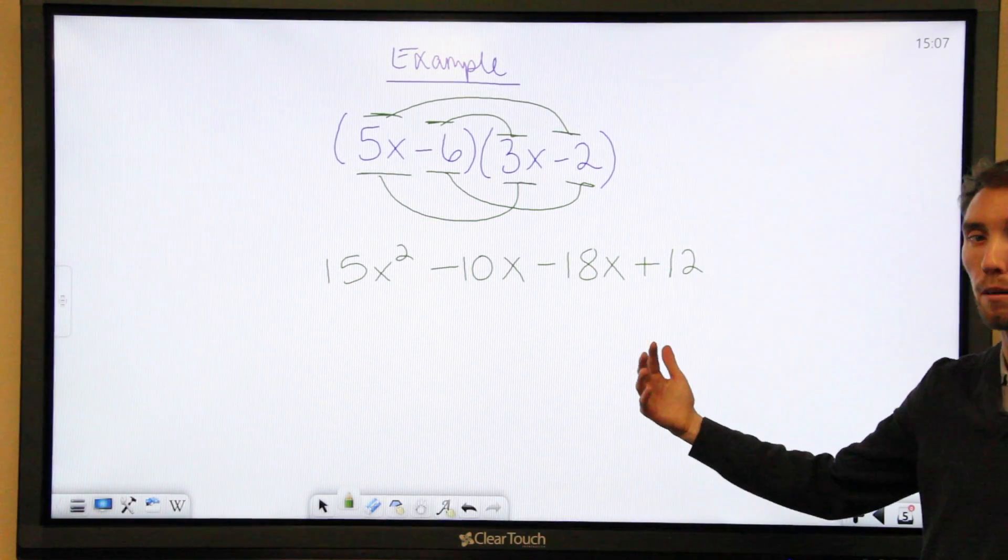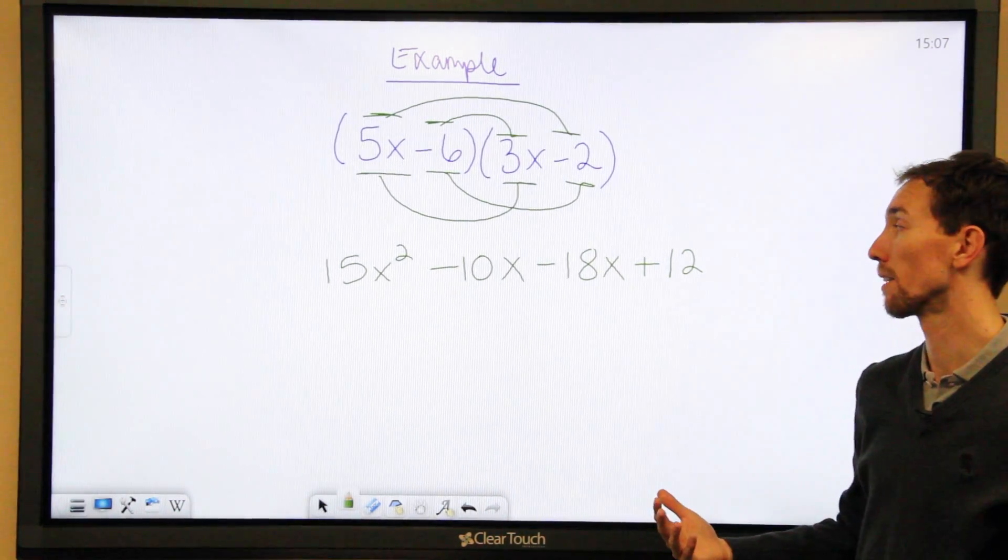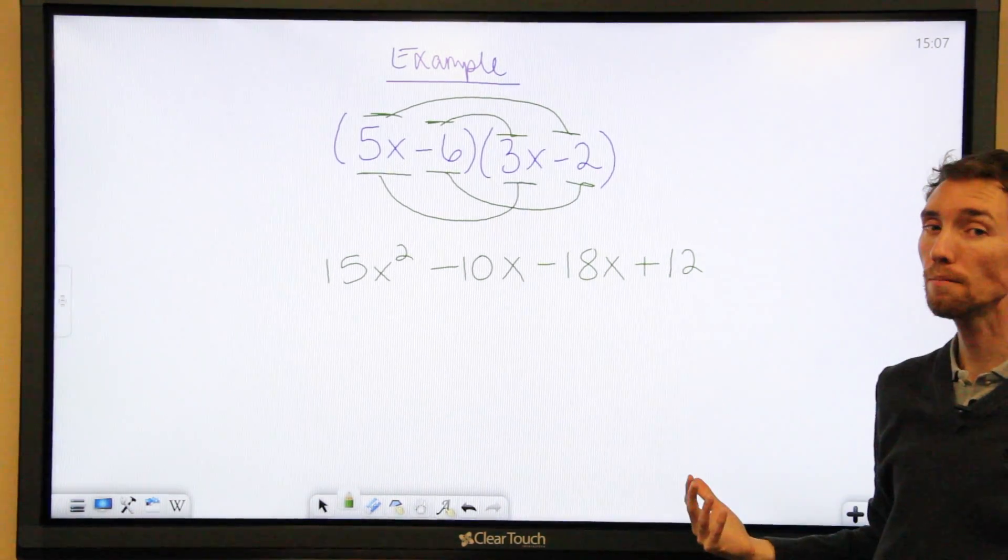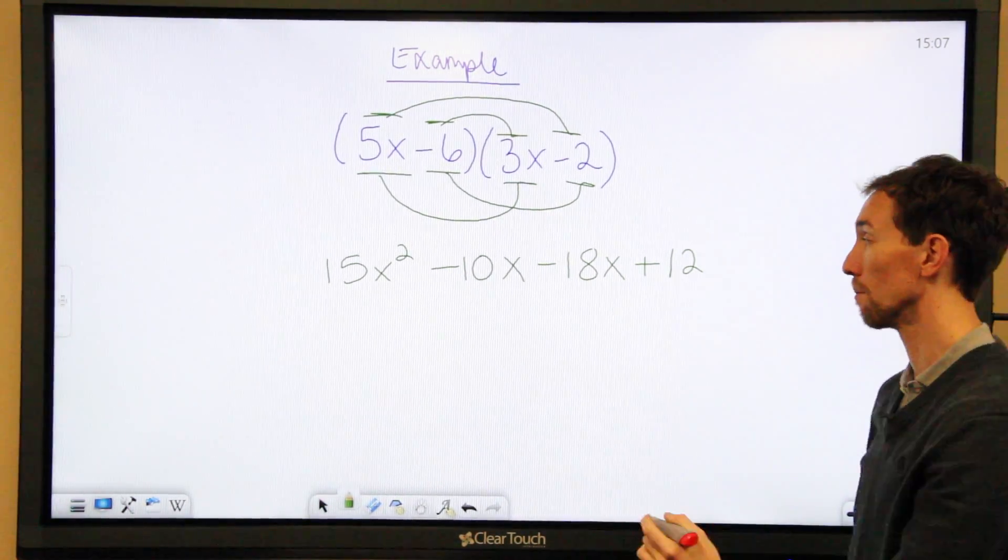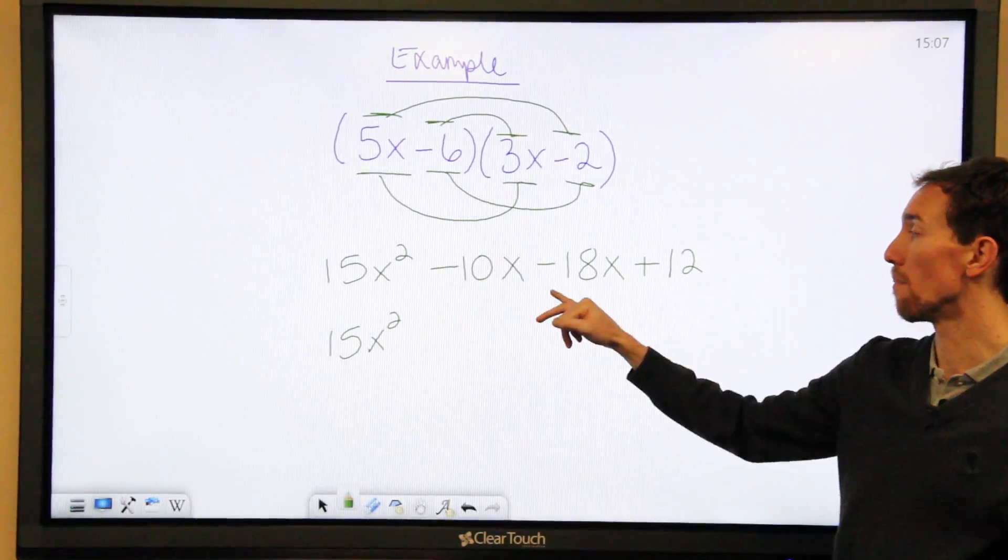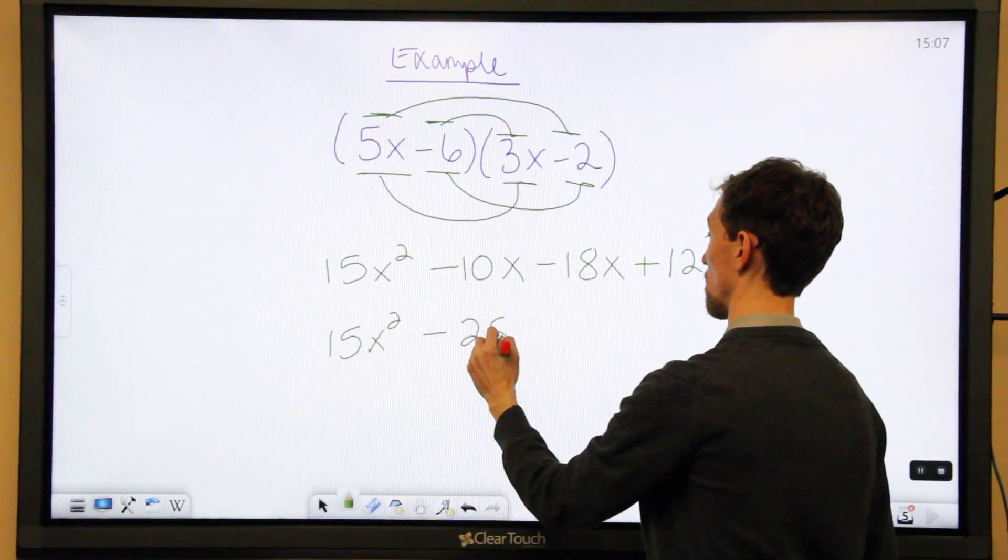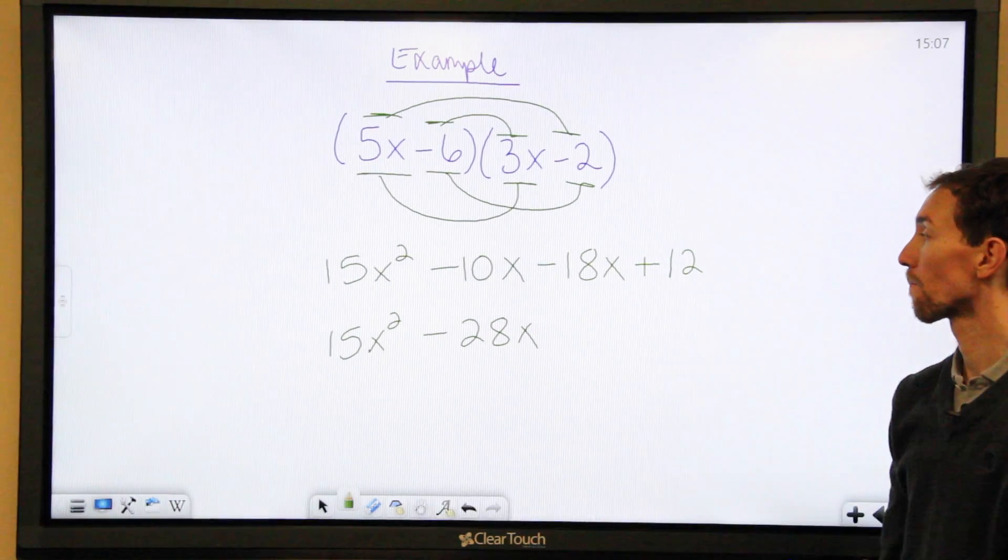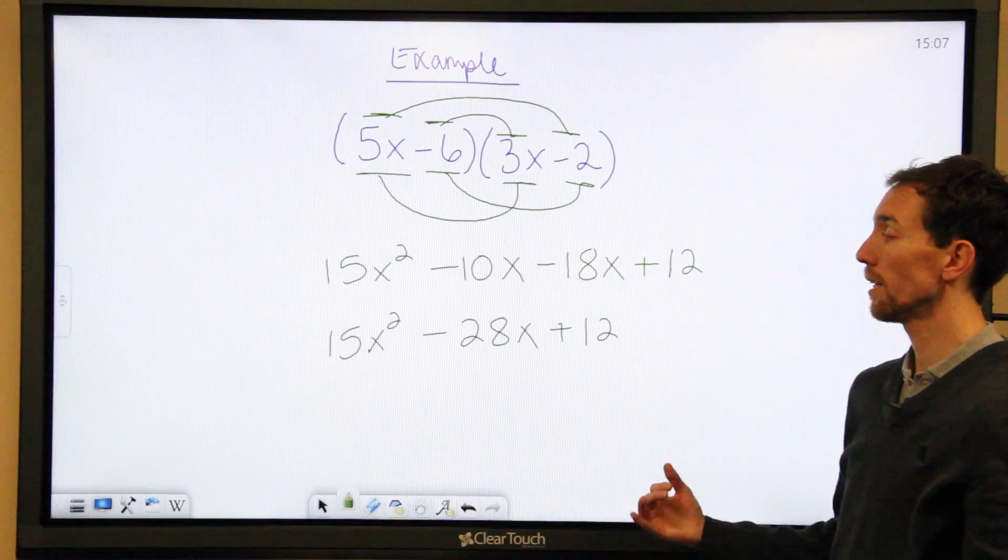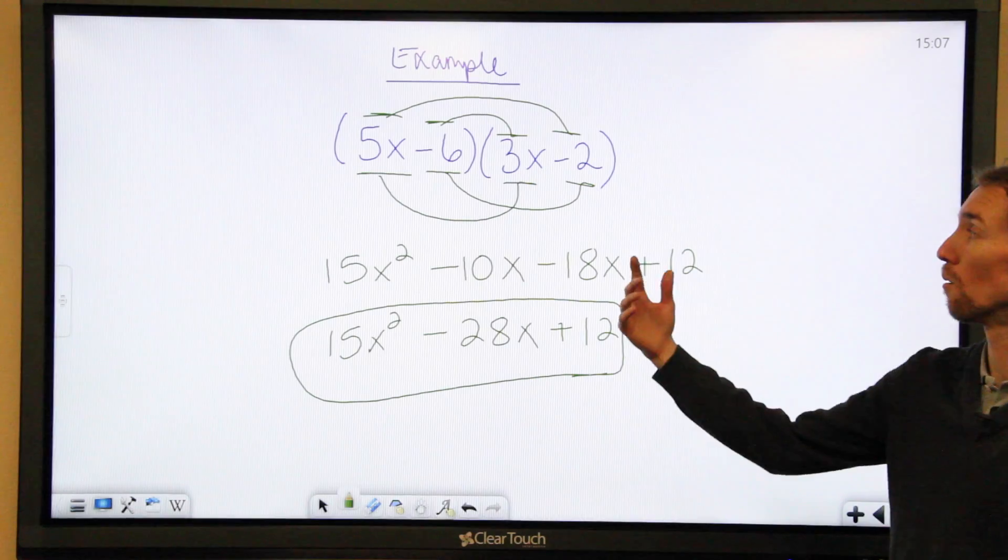Again, last step. See if you can combine like terms to further simplify your answer. Negative 10x minus 18x. Those are like terms. So we can combine them. This stays the same. Negative 10 minus 18 is negative 28x and plus 12. So this is our final simplified answer of our original binomials.